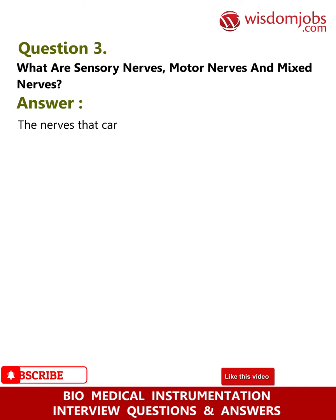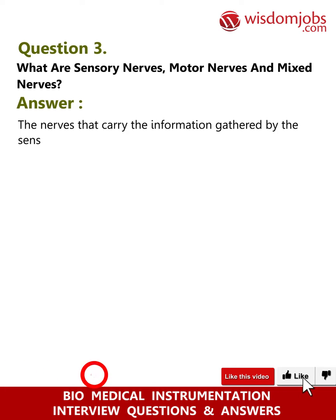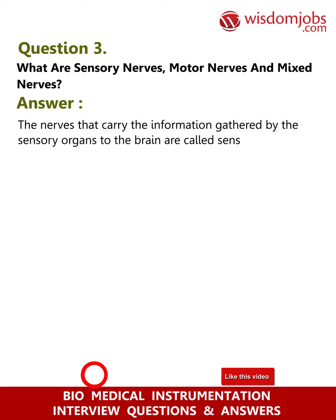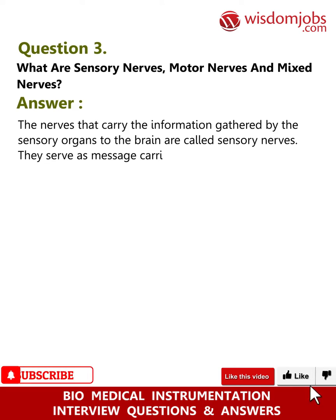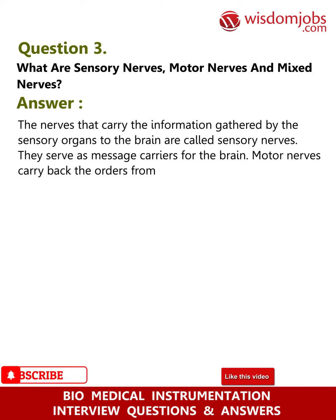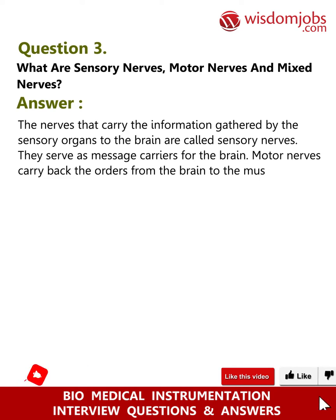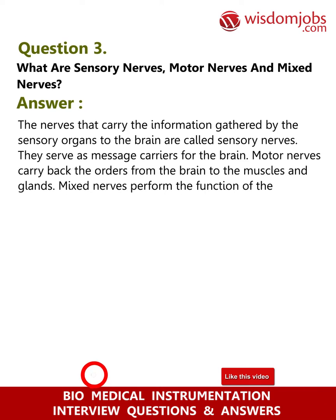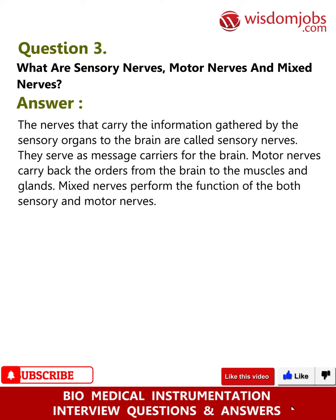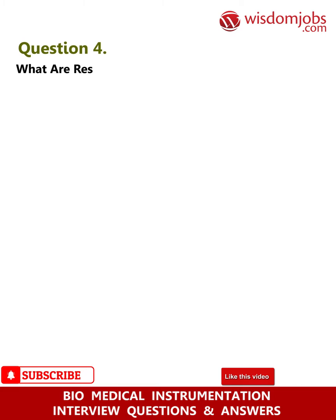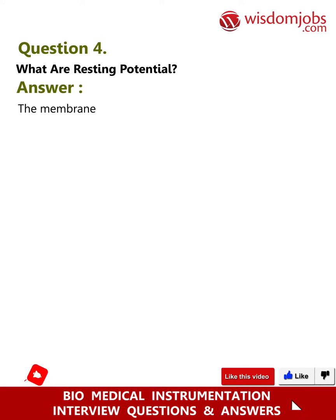Question 3: What are sensory nerves, motor nerves, and mixed nerves? Answer: The nerves that carry information gathered by the sensory organs to the brain are called sensory nerves — they serve as message carriers for the brain. Motor nerves carry back the orders from the brain to the muscles and glands. Mixed nerves perform the functions of both sensory and motor nerves.